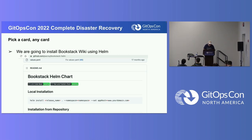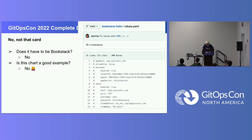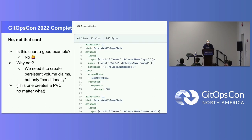Why is this not a good example? Here's the persistent volume claim — it's not wrapped in any conditionals. So this one creates a PVC unconditionally. It creates a persistent volume unconditionally. So we've chosen poorly. We need that existing claim field for a reason I'll be illustrating shortly.